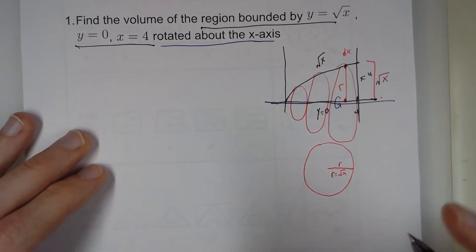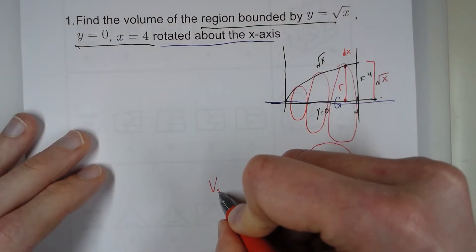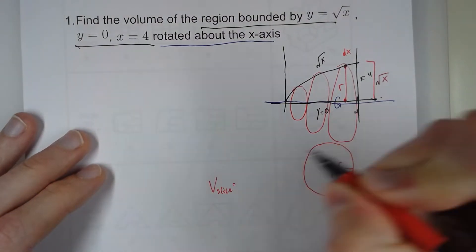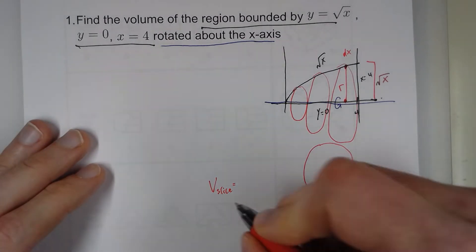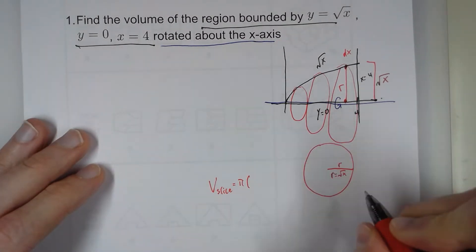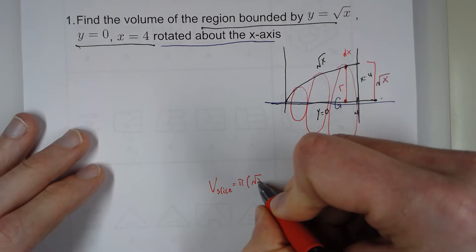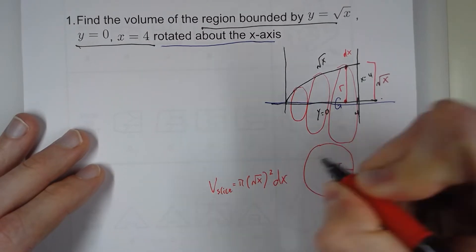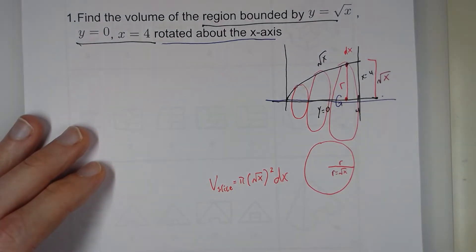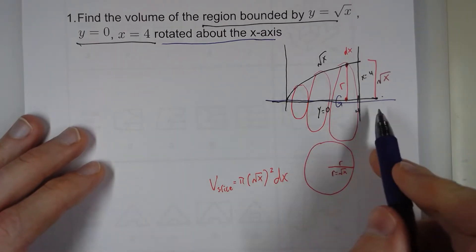So if I want the volume of this slice, this is a circle. So the area is pi r squared. But we said that r was square root of x. And the thickness is dx. Now that's the volume of just one slice. Now what if I add up all of these slices?